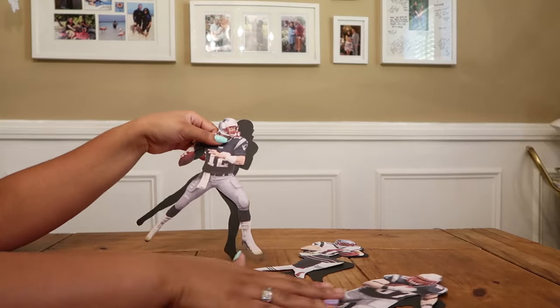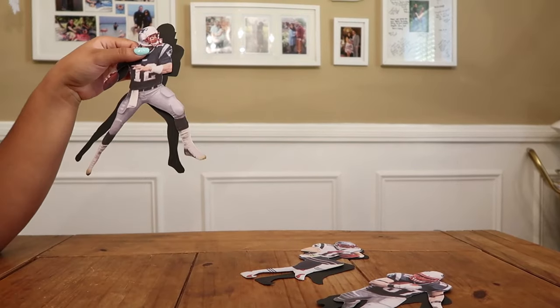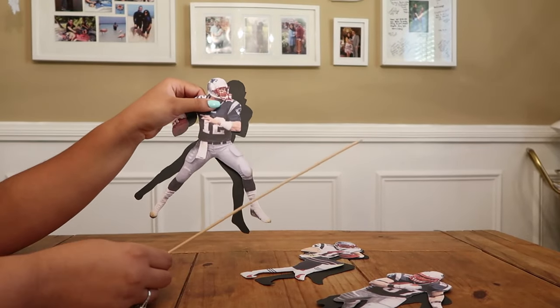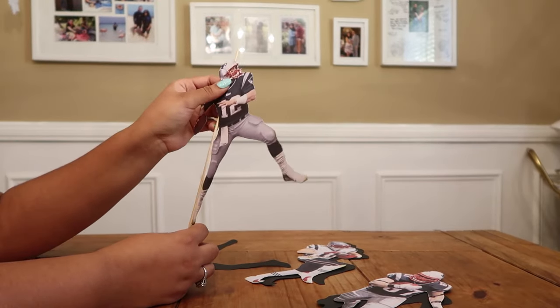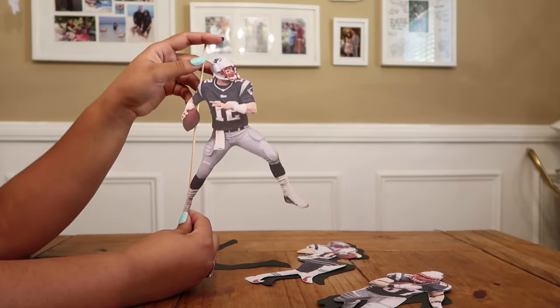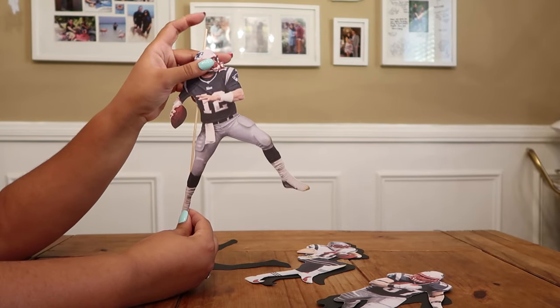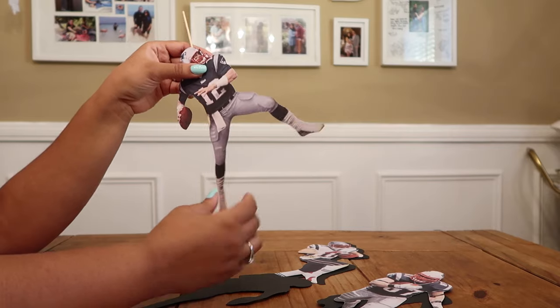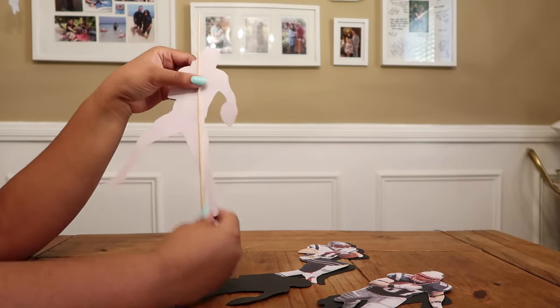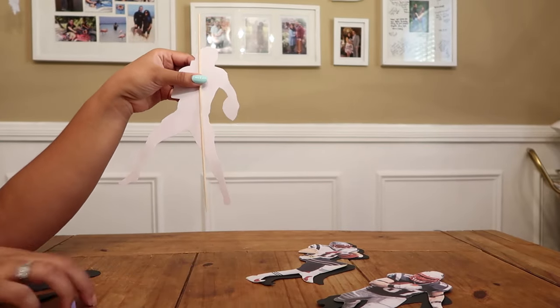So in order to make our images stand, what I'm going to be using are shish kebabs and I'm basically going to glue the image onto the shish kebab, cutting off any of the remainder part of the stick. Once I glue on the front image to the shish kebab I'm going to turn the image over and glue on the back.